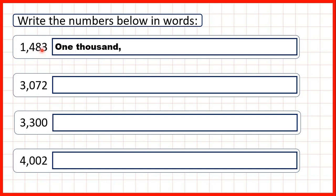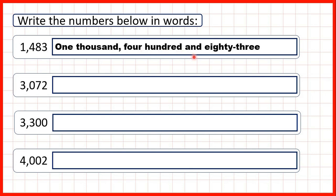Then we can look at the last three digits of our number. We already know how to write three-digit numbers in words, so because we have 4, 8, 3, we can write 483.